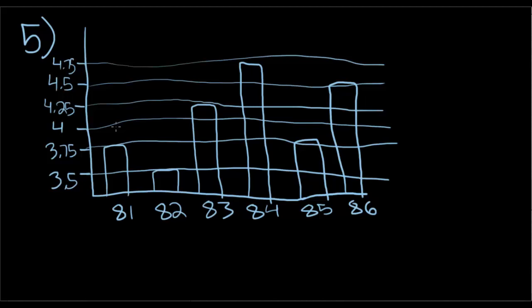So let's start from the left side. These are all of the 1900s, so 1981, 1982, 1983, so on. So from 81 to 82, there is a change of 0.25. From 82 to 83, there is a 0.75 change.